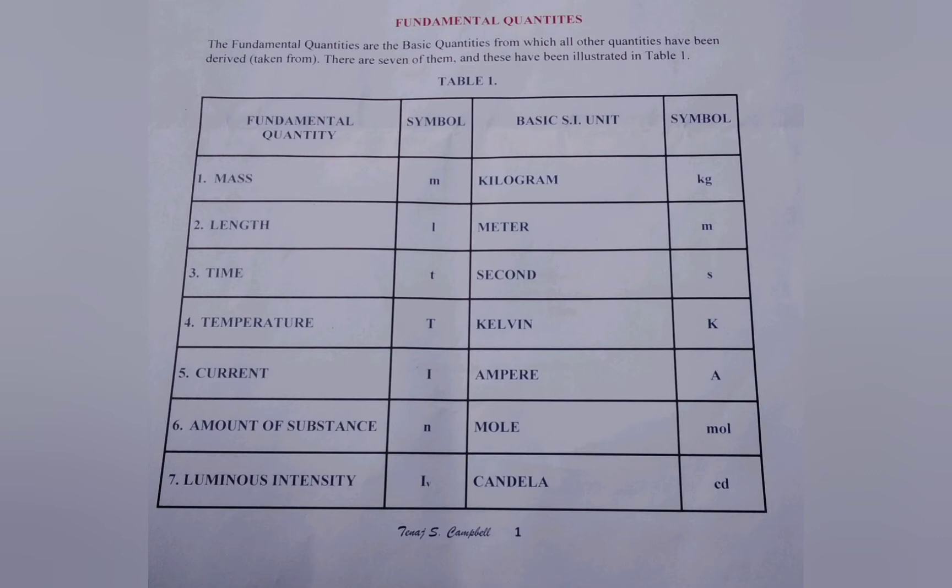Starting with fundamental quantities. Fundamental quantities are the basic quantities from which all other quantities have been derived or taken from. There are seven of them and these have been illustrated in the table as shown.